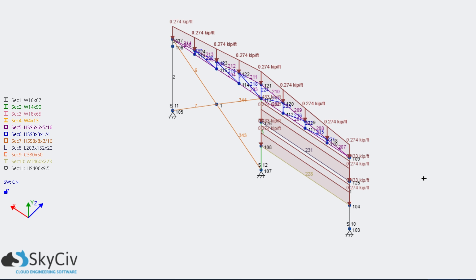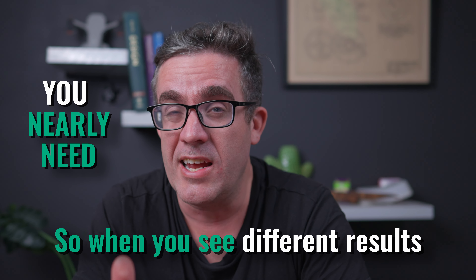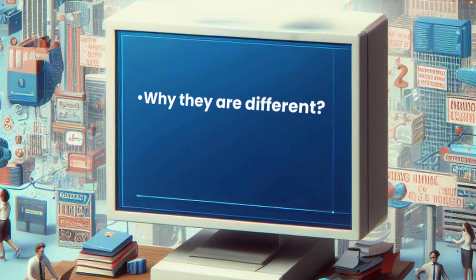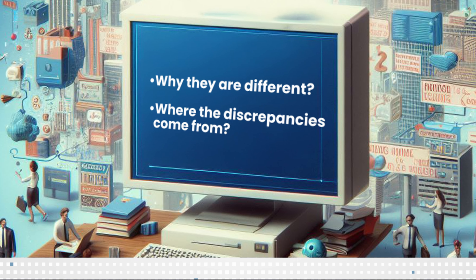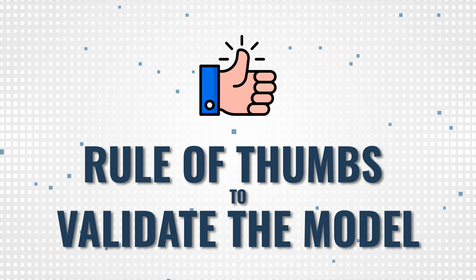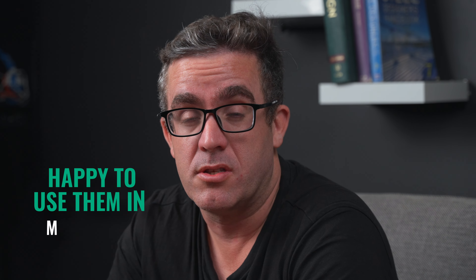Just because results don't match those rules of thumb doesn't mean they're incorrect. Sometimes you may have made incorrect assumptions, hence why the results are different. When you see different results, you need to break down why they are different and where the discrepancies have come from. Let's break down the rules of thumb I use to validate the model and make sure the results I'm getting are reasonable before I use them in my design.